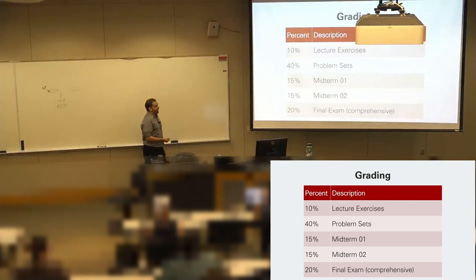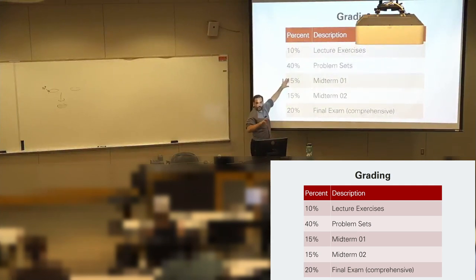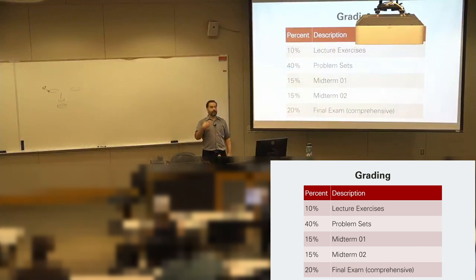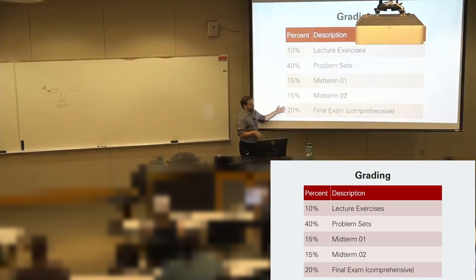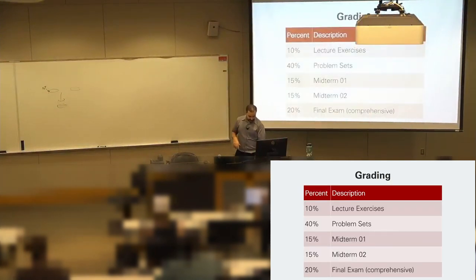On grading: you're going to have two midterms and a final exam. The first section comes out of graph traversal — very much still in 316 land. Midterm two is the logic section: representing and making AI understand things. The final is comprehensive, including the machine learning material. The other half of your grade comes from lecture exercises and problem sets.